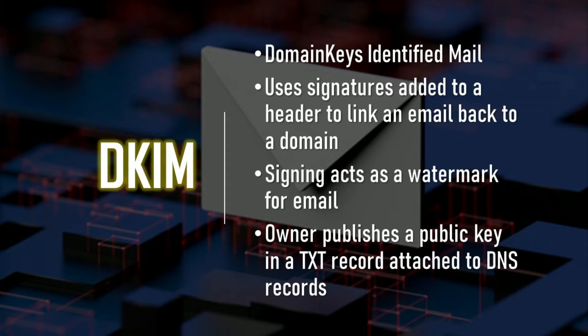DKIM adds a digital signature to the headers of an email message, and that signature acts as a watermark and can be validated against a cryptographic key in the company's DNS records. The domain owner publishes a cryptographic public key as a specially formatted TXT record into the domain DNS records. When a message is sent by the outbound mail server, the server generates and attaches a unique DKIM signature header to the message, which allows the receiving mail server to validate the email message.